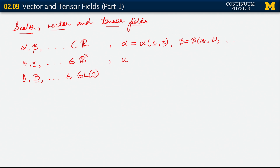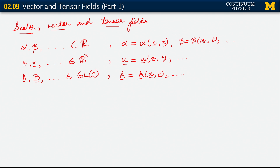Likewise for vectors: u is u parametrized by position and time, and so on for any other vector. Likewise for our tensors: a is parametrized by position and time. So this is what makes them fields — they are spatial and, if you like, temporal fields as well. What this means is that now, since we can talk of these scalars, vectors and tensors varying over position and time, we can go ahead and compute derivatives.